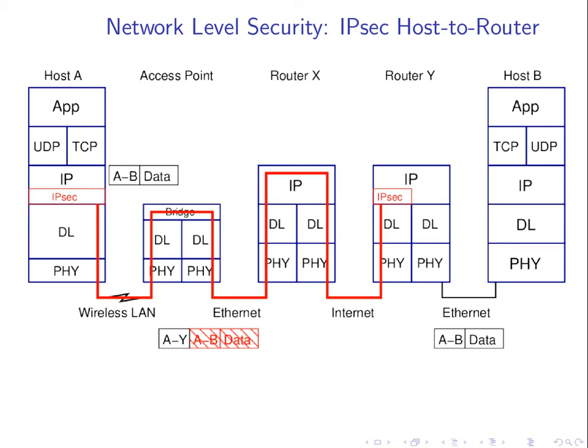First thing to note: we don't have end-to-end encryption. Between host A and host B, the entire path does not use encryption, and that's a disadvantage — because if an attacker intercepts the traffic between router Y and host B, the traffic is not encrypted, so that's a security flaw. It's only encrypted from host A to the router. So why would we do this as opposed to the host-to-host version of IPsec?